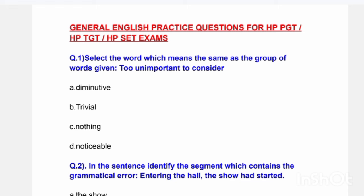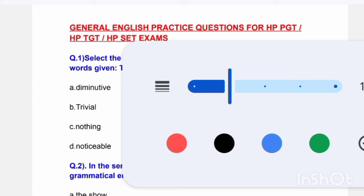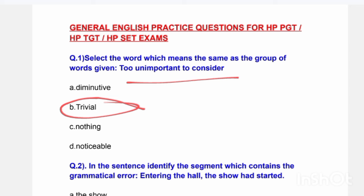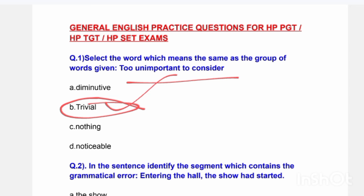Question 1: Select the word which means the same as the group of words given. 'Too unimportant to consider.' The options are: demulative, trivial, nothing, or noticeable. The correct answer is B — Trivial.